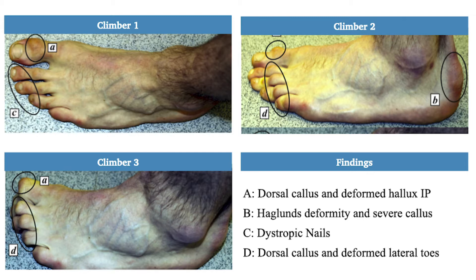If we take a look at the screen here, we can see several different deformities of the foot, ankle, and toes. We see in climber one a dorsal callus over the great toe, a deformed hallux IP joint, and a hallux valgus position. Additionally, we see dystrophic nails.